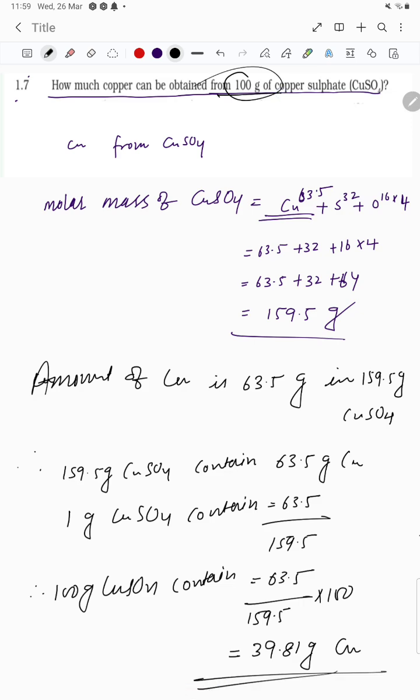Amount of copper present in 100 grams is 39.81 grams copper. Thank you very much for watching, very simple question.